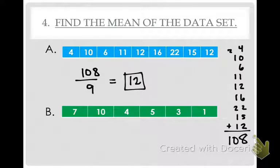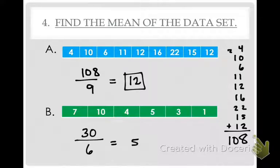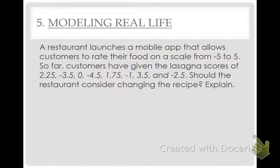Let me have you guys do problem B on your own. When you add up all those numbers, what did you get? 30. How many numbers were there? 6. So your mean is 5. Good job.